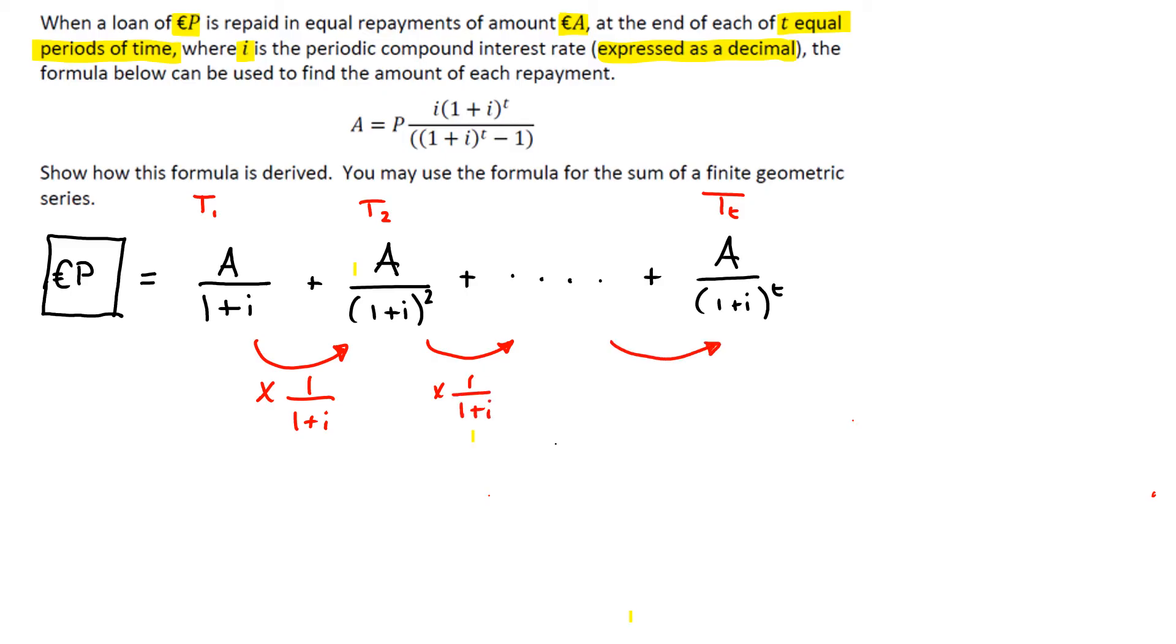And we need to know two things for the geometric sequence. Well, we need to know three things really. So our first one is A, the first term, which is A over 1 plus I.